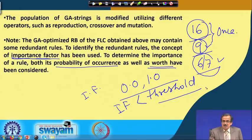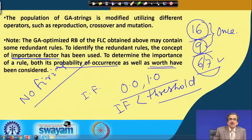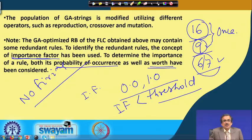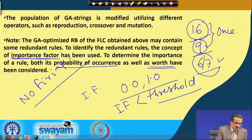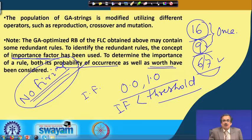However, if we keep reducing the rule base, there is a possibility of a no-firing situation — where for some set of test inputs, not a single rule is triggered and we cannot determine any output. Our aim is therefore to reduce redundant rules while ensuring there is no such no-firing or weak-firing situation.